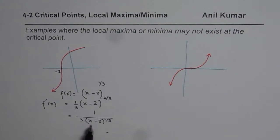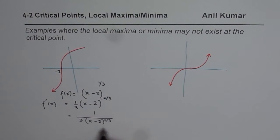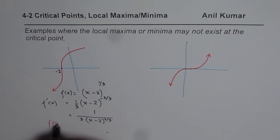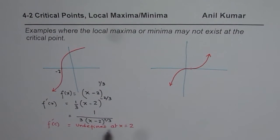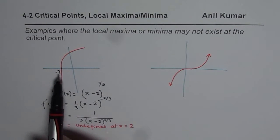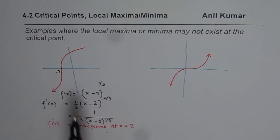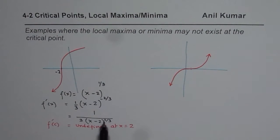Clearly we have a critical number at x = 2, because at x = 2 the derivative for the given function is undefined. So we have a critical number at x = 2. Now if you analyze on either side of x = 2, taking a test point on the left side and on the right side of this function — what do you notice? Since the power is 2/3, the square makes it positive.